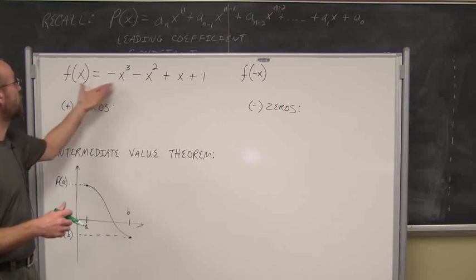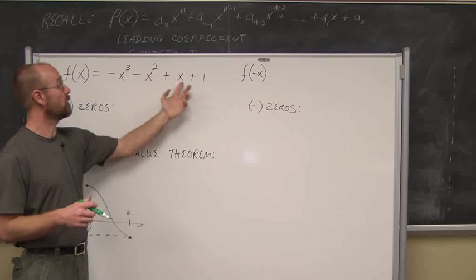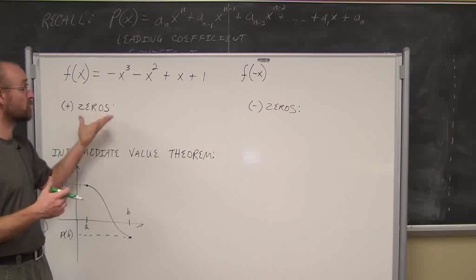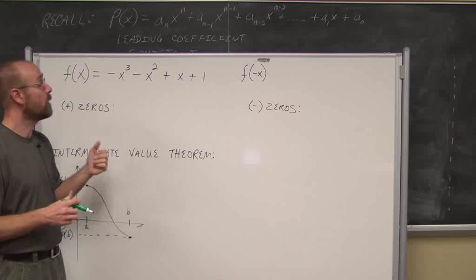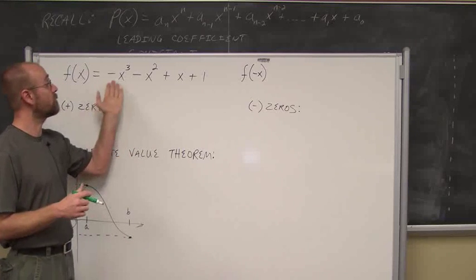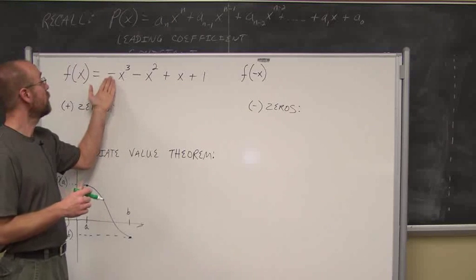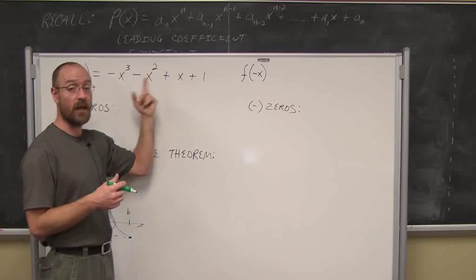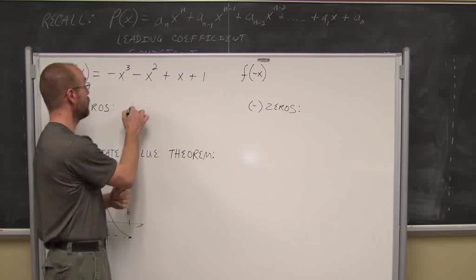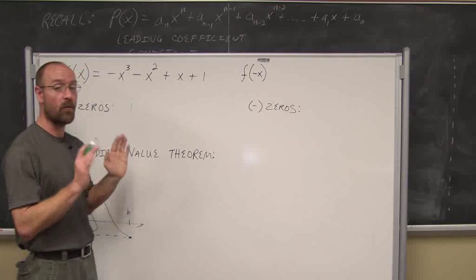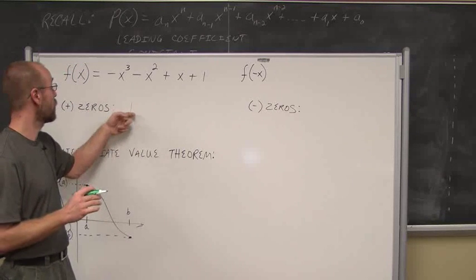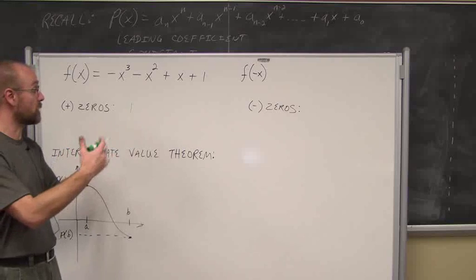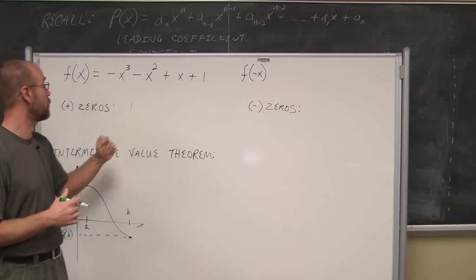Let's look at an example. If I have f(x) = -x³ - x² + x + 1, I want to find the possible positive zeros. Essentially what Descartes says is we just assess the signs from left to right. It's negative, the next term is also negative — no change in sign. The next term is positive — that's a sign change, so I have one sign change. It remains positive, so we only have one possible positive zero.